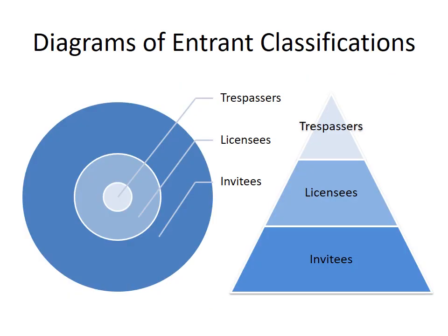These diagrams are a reminder about the basic setup of the entrant classification system. For trespassers, there's a very narrowly limited duty of care. For licensees, there's a little bit more responsibility, but it's not a full-blown duty of care. Invitees are owed a general duty of reasonable care, meaning their duty isn't limited at all. You can think of this as concentric rings or as a pyramid — trespassers at the top with very little responsibility, licensees in the middle, and invitees at the bottom receiving the full duty of reasonable care.